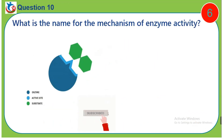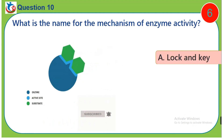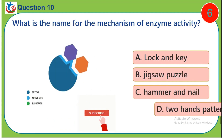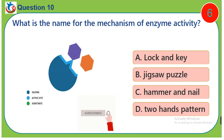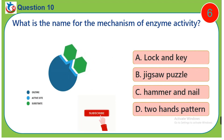Question 10. What is the name for the mechanism of enzyme activity? A. Lock and key. B. Jigsaw puzzle. C. Hammer and nail. D. Two hands pattern.